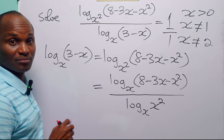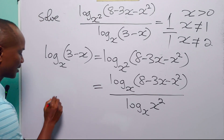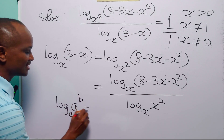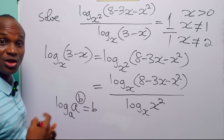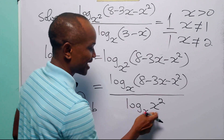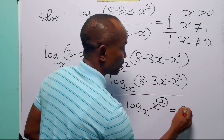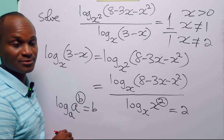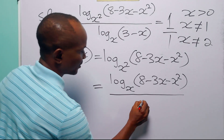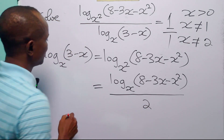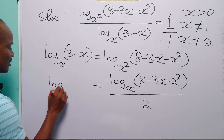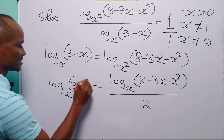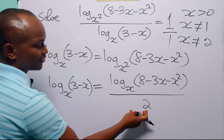Now let us look at this denominator. Remember that log base x of a to the power b is equal to b. That simply means log base x of x² is equal to 2. So the whole denominator simplifies to the number 2, and on the left-hand side we still have log base x of (3 minus x).